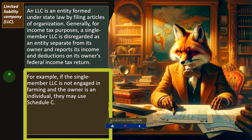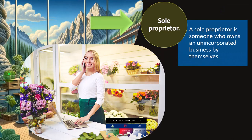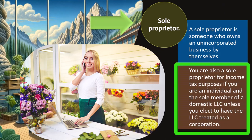If the single-member LLC is not engaged in farming and the owner is an individual, they may use a Schedule C. A sole proprietor is someone who owns an unincorporated business by themselves. You are also a sole proprietor for income tax purposes if you are an individual and the sole member of a domestic LLC, unless you elect to have the LLC treated as a corporation.